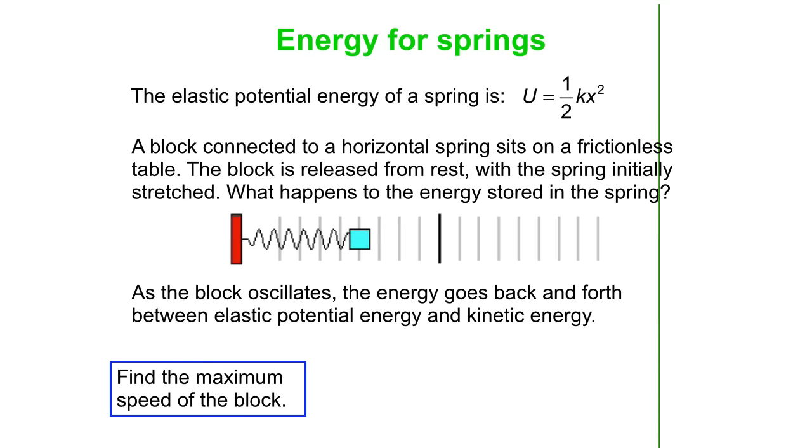So let's say we want to know the maximum speed of the block. We can say maximum potential is the maximum kinetic. Those happen at different times, right? Maximum kinetic where it's passed through equilibrium, maximum potential where it's at rest just for an instant at the turnaround point. So then we can say one-half kx_max squared is one-half mv_max squared.